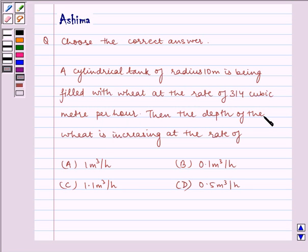Then the depth of the wheat is increasing at the rate of: A. 1 meter per hour, B. 0.1 meters per hour, C. 1.1 meters per hour, or D. 0.5 meters per hour.